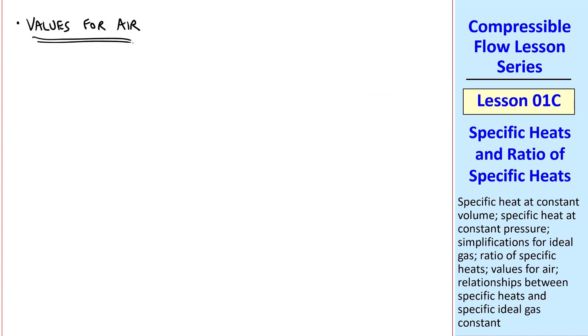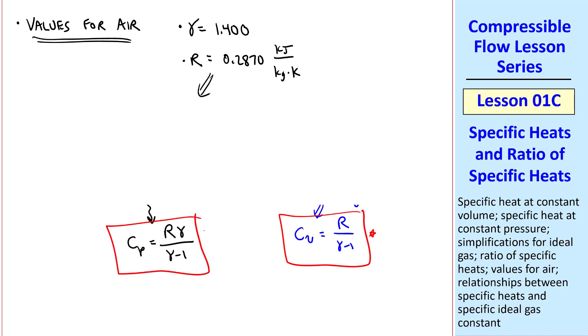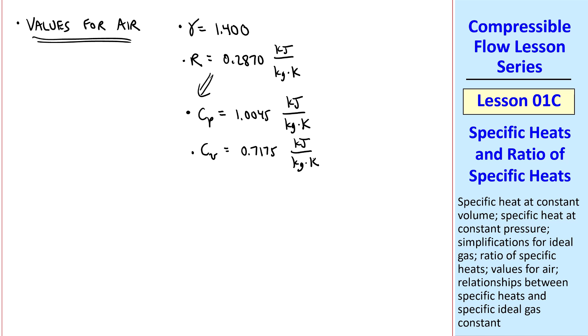Now I'll give the values of these properties for air. Gamma equal 1.400. R, we've already shown, was 0.2870 kJ per kg K. Note that gamma has no units since it's dimensionless. If you plug in the two equations above for Cp and Cv, you get Cp equal 1.0045 kJ per kg K and Cv is 0.7175 kJ per kg K. These are the values you should use for air. But the same equations hold for ideal gases that are not air.